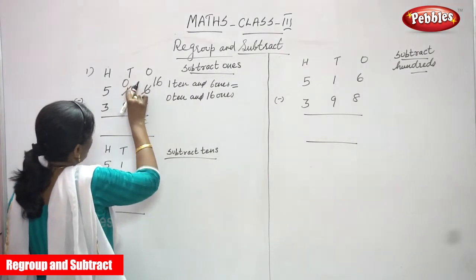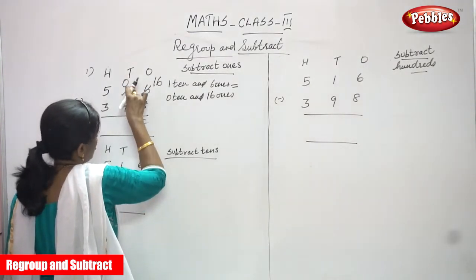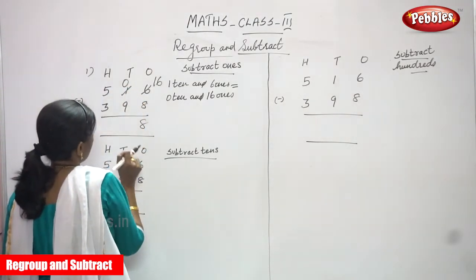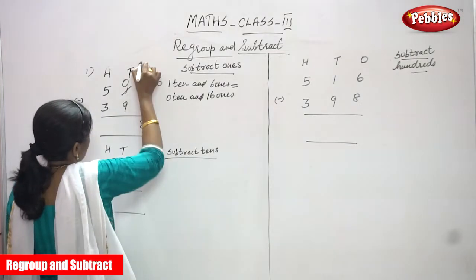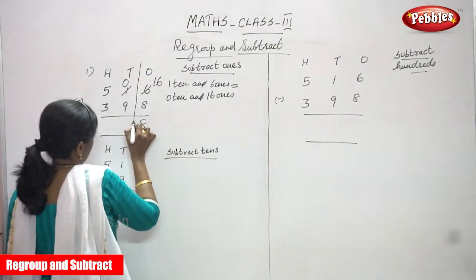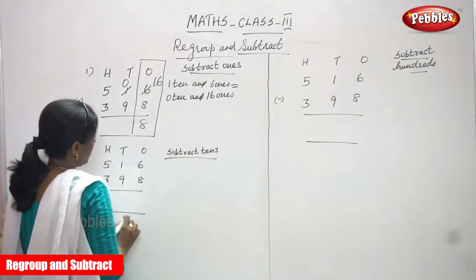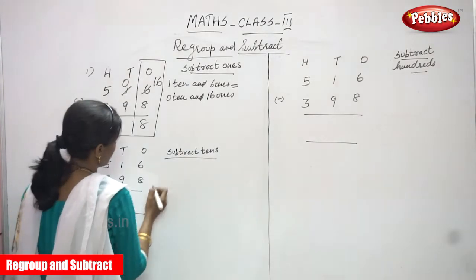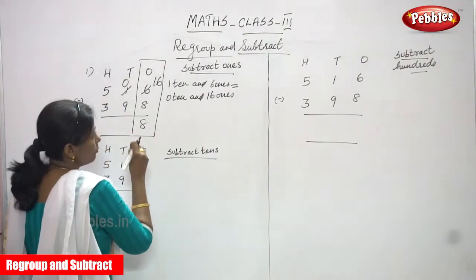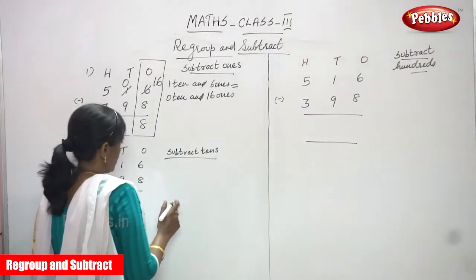Now the tens place shows zero, and we need to subtract 9. Zero is not enough to subtract, so we have to borrow from the hundreds place. Each and every digit has to be done individually — that is the regrouping method. So now we subtract the tens place.